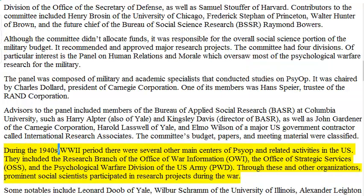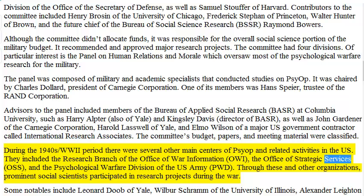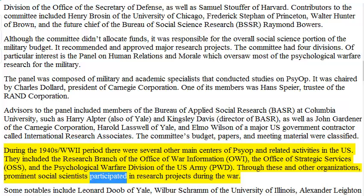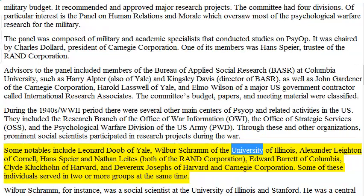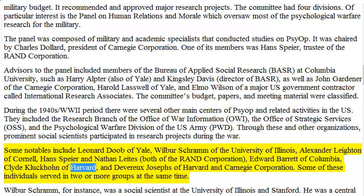During the 1940s and World War II period, there were several other main centers of PSYOP and related activities in the United States. They included the Research Branch of the Office of War Information, the Office of Strategic Services, and the Psychological Warfare Division of the United States Army. Through these and other organizations, prominent social scientists participated in research projects during the war. Some notables include Leonard Doob of Yale, Wilbur Schramm of the University of Illinois, Alexander Leighton of Cornell, Hans Speyer and Nathan Leites, both of the RAND Corporation, Edward Barrett of Columbia, Clyde Kluckhohn of Harvard, and Devereux Josephs of Harvard and Carnegie Corporation. Some of these individuals served in two or more groups at the same time.